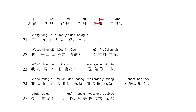Remember that we cannot use letter E because it is used in the example. We have letter A, 'jiù', which can be translated as 'so' or 'then'. Letter B, 'ba' — we use this particle at the end of a sentence in order to make suggestions. Letter C, 'hái', meaning 'still', but we can also use it to say 'so-so', 'not bad', 'passable'. Letter D, 'duì' — in this context we are going to use it with the meaning 'for'. Letter F, 'yǐhòu', meaning 'after'. With these words, we have to fill in the blanks in the sentences below.